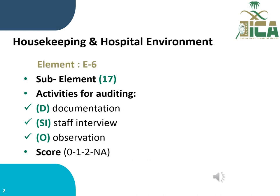Domain E consists of different elements, and one of them is housekeeping and hospital environment, which is element number 6. This element consists of 17 sub-elements. The activities required for auditing these sub-elements will be through document review, staff interview, observation, and scoring: zero for not met, one for partial, two for fully met, and NA for not applicable sub-elements.